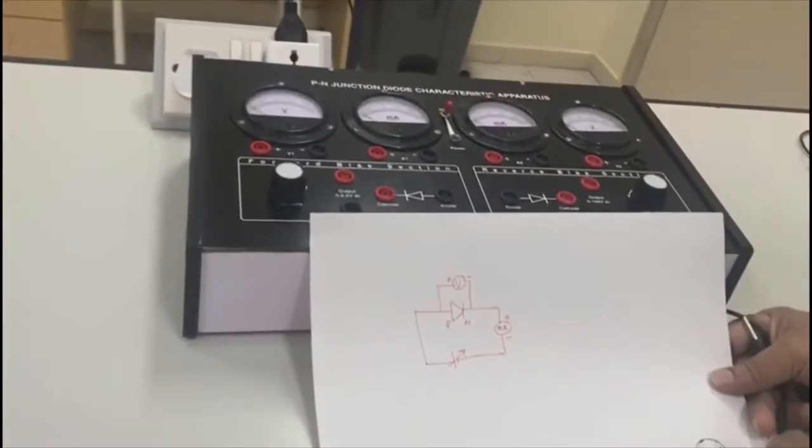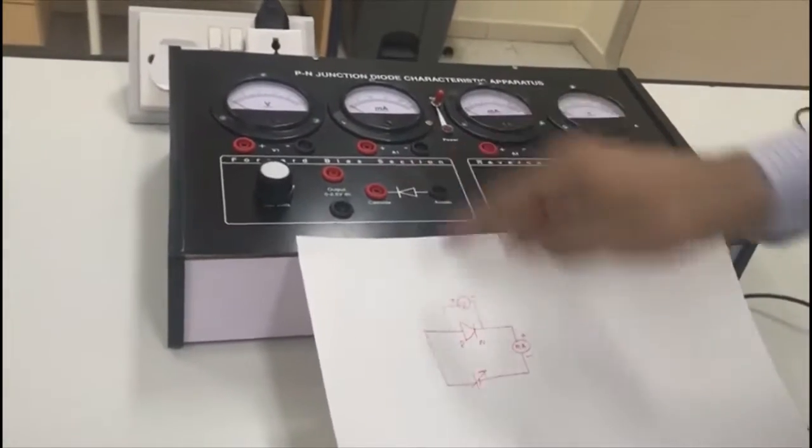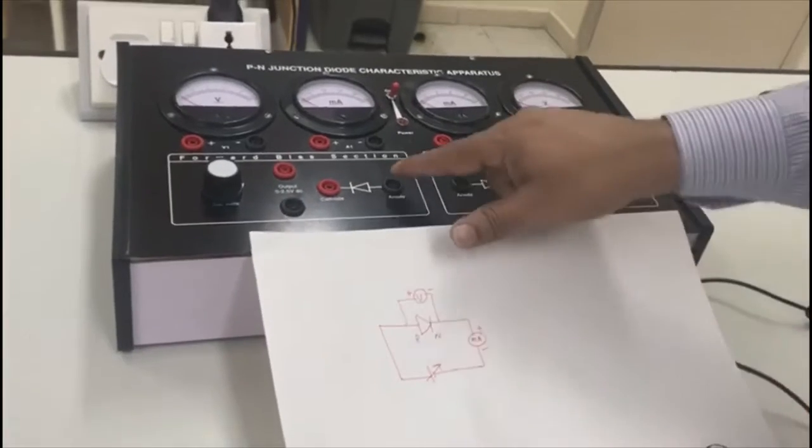P-N junction forward biasing. You can see the circuit diagram. The triangle side is P.